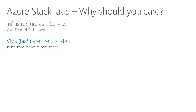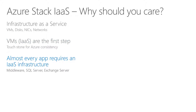Virtual machines and Infrastructure as a Service are the first step. More or less all services in Azure Stack are implemented as virtual machines under the covers. For most of our customers, Infrastructure as a Service is the first thing they try and want to use in Azure as well as in Azure Stack. Almost every application today requires Infrastructure as a Service infrastructure — when you think of classic applications, in most cases they require some kind of middleware: SQL Server, Exchange Server, and most of these services require a virtual machine.